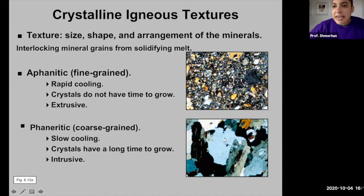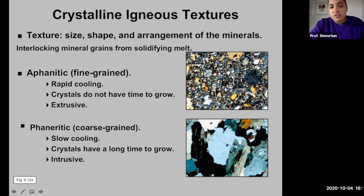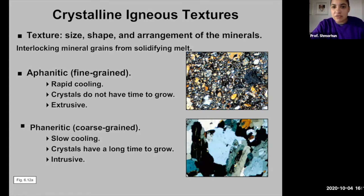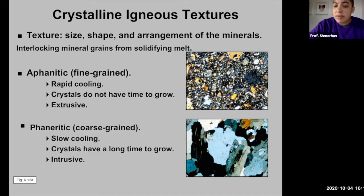We have about five main different types of textures that we'll go over in this course. Texture is the description of the size, shape, and arrangement of the minerals that comprise an igneous rock. As that igneous rock cools and solidifies from a melt, all those mineral grains grow and interlock with one another.